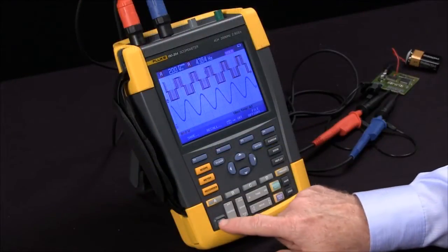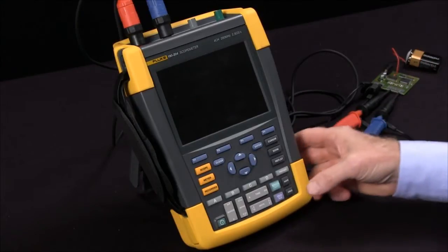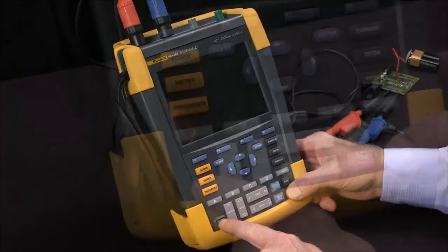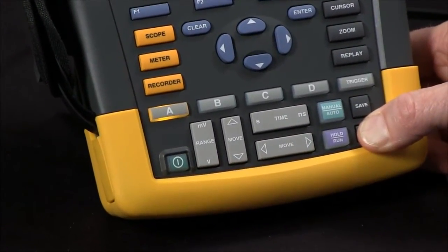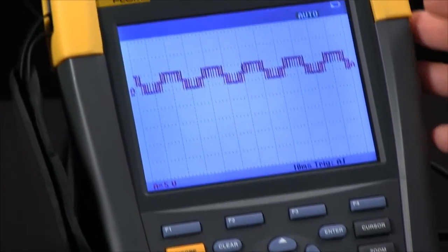I'm going to go ahead and turn the scope off and turn it back on with the factory defaults by holding the user key down. Hold the user button, press and release the power, the scope beeps twice, and it comes back with factory defaults.